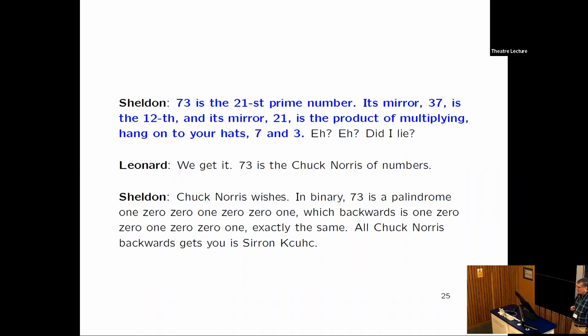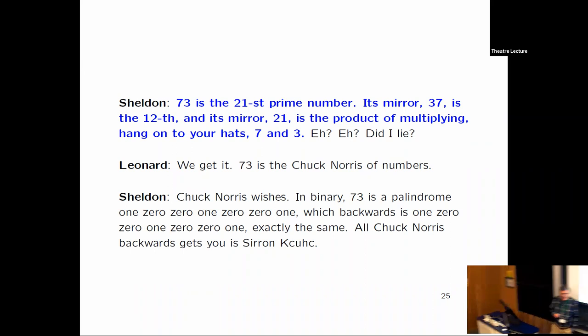Did I lie? It's the best number. So Leonard says, we get it, 73 is the Chuck Norris of numbers. Sheldon says, Chuck Norris wishes. In binary, 73 is a palindrome, 1001001. Which backwards is 1001001. That's in case the audience didn't know what a palindrome is. Exactly the same. Old Chuck Norris backwards gets you Sirron Kcuhc.